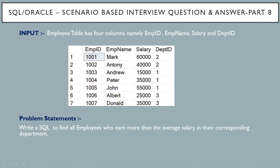First, the input table. The Employee table has 4 columns namely employee ID, employee name, salary, and department ID. Now the problem statement: write a SQL query to find all employees who earn more than the average salary in their corresponding department.